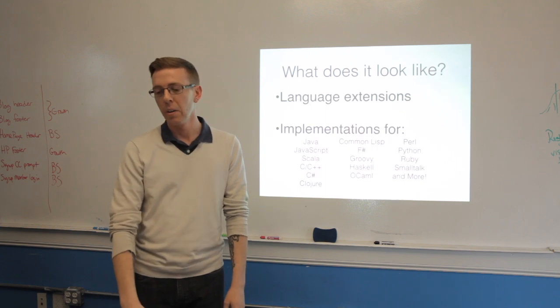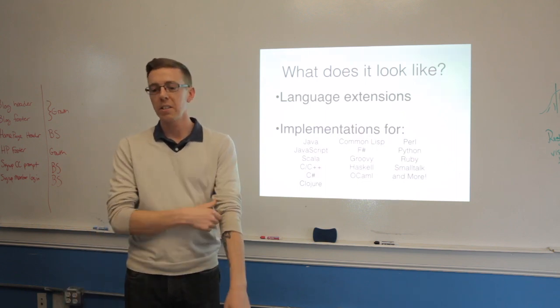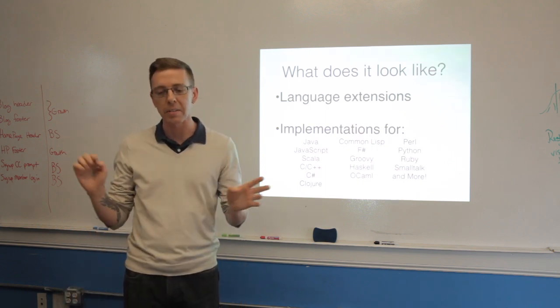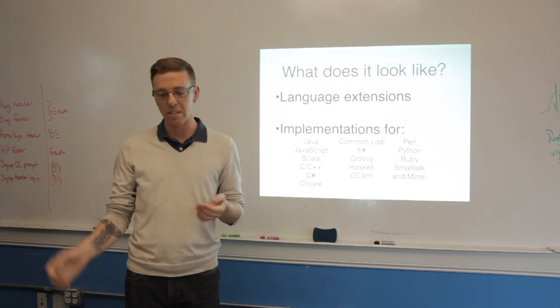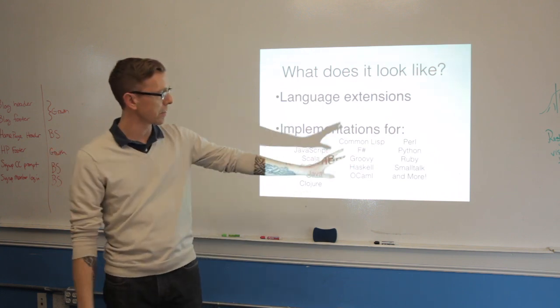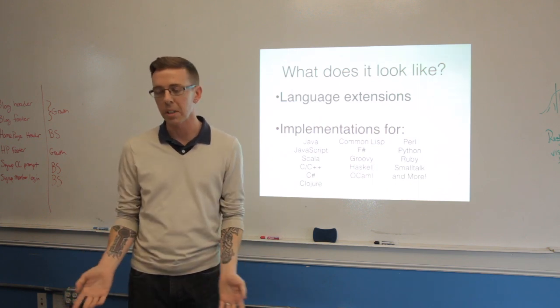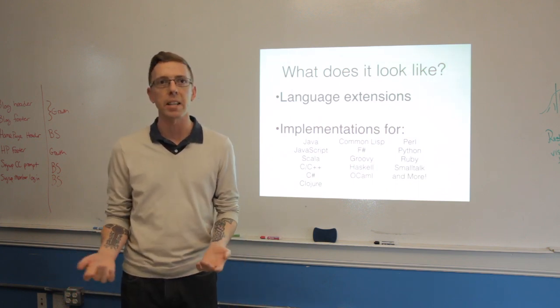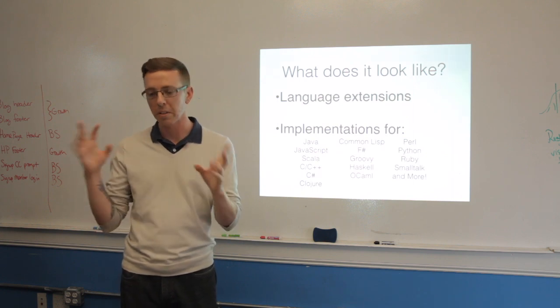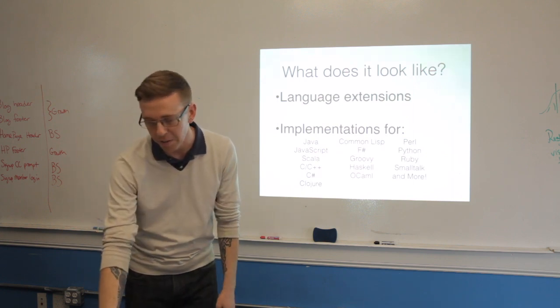Which kind of brings us to, so what does it look like? Generally, it's usually language extensions. And so there's a big list of languages which have different levels of support. A lot of times, for C++ you need a special compiler with special flags, and it'll compile your code and put all the special magic in there behind the scenes.